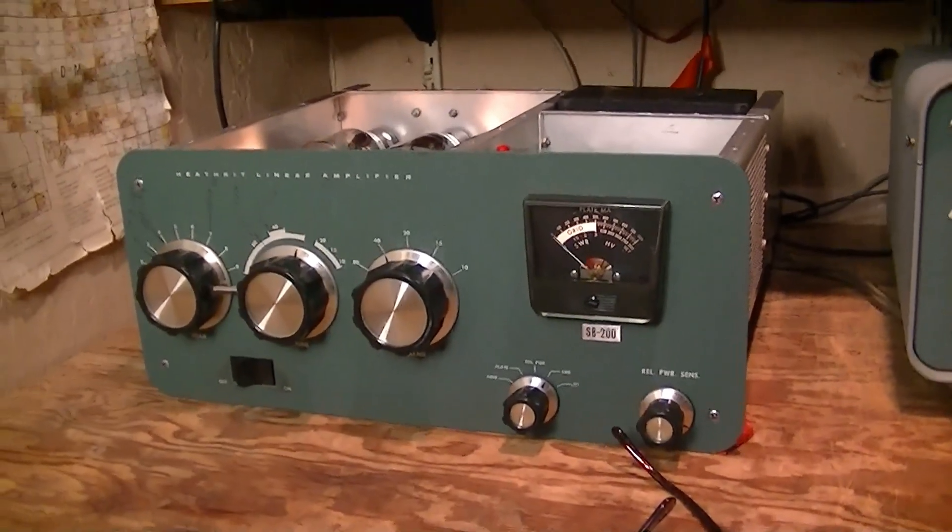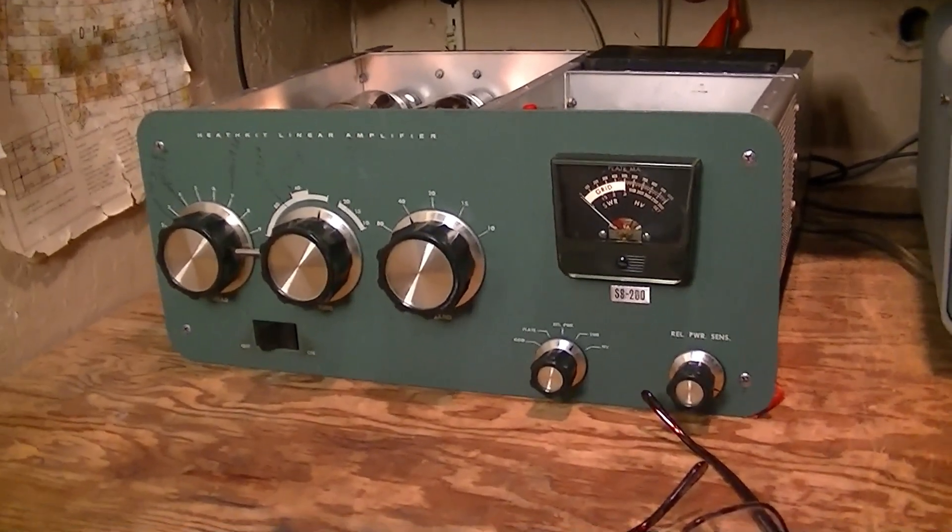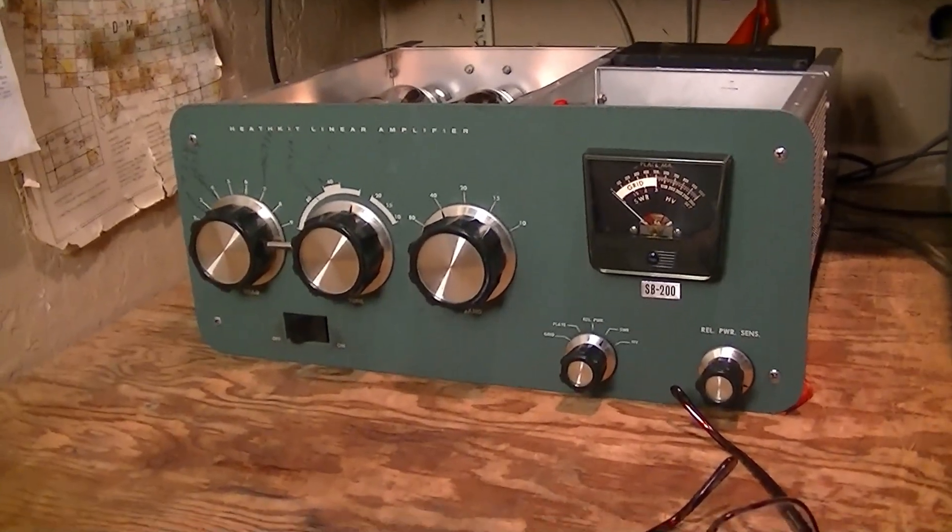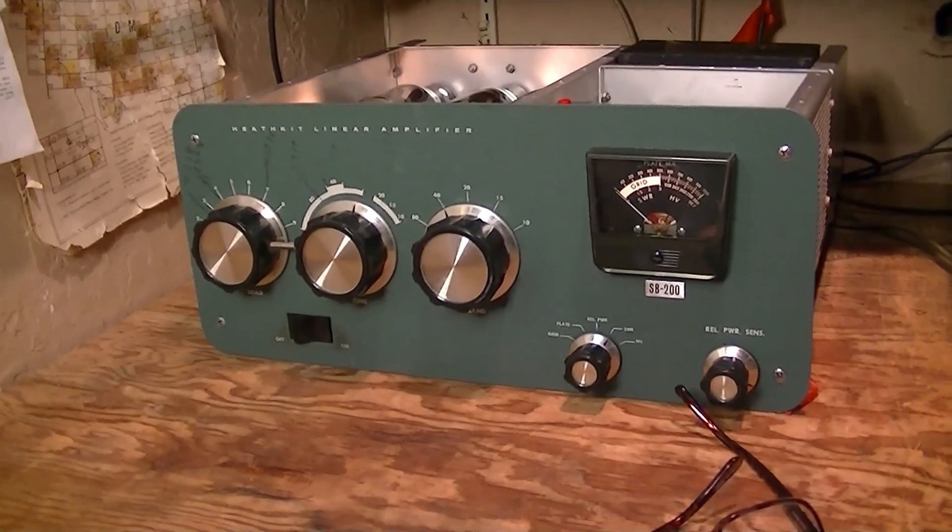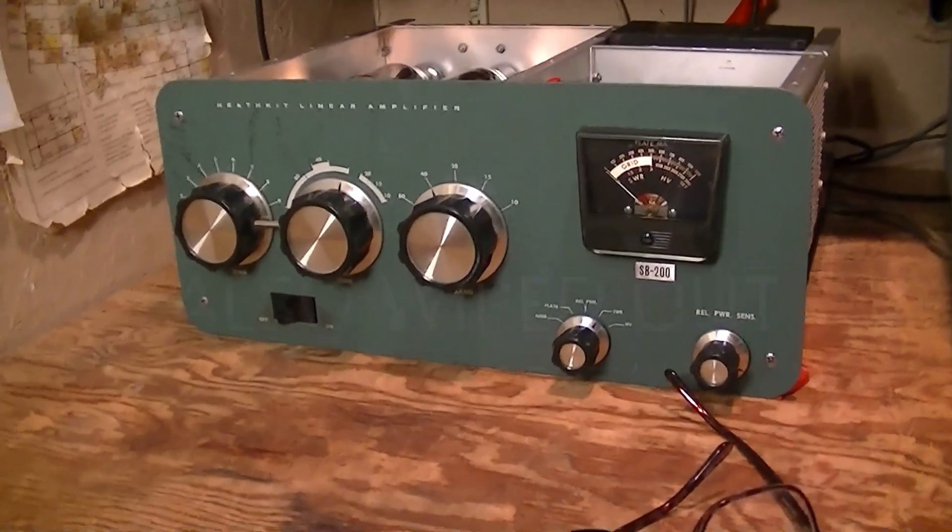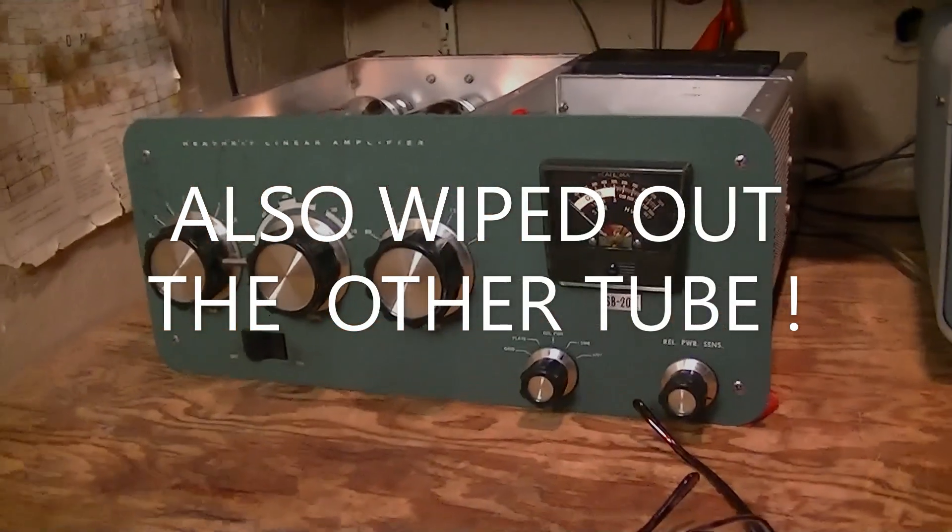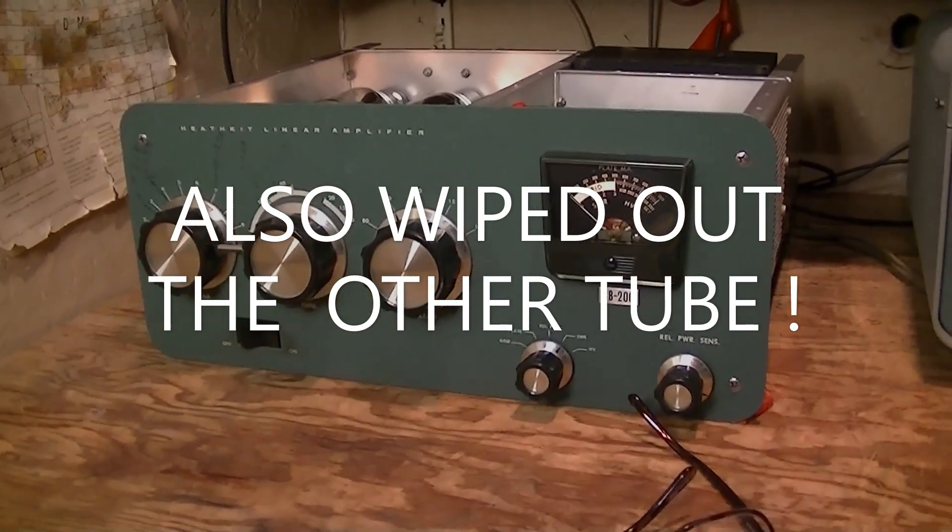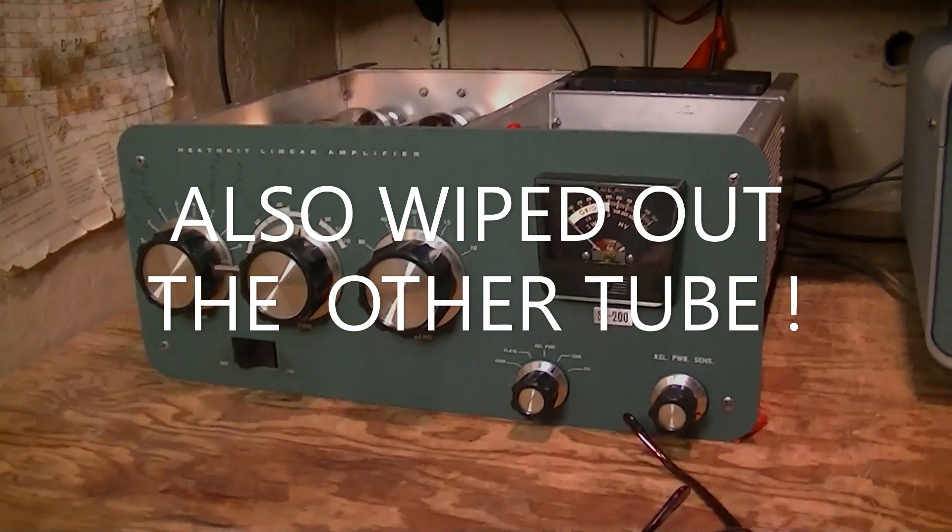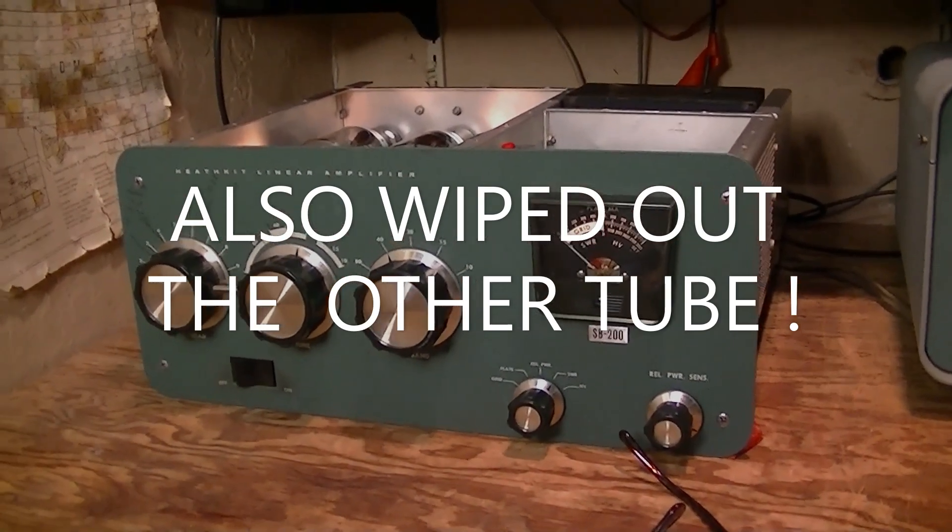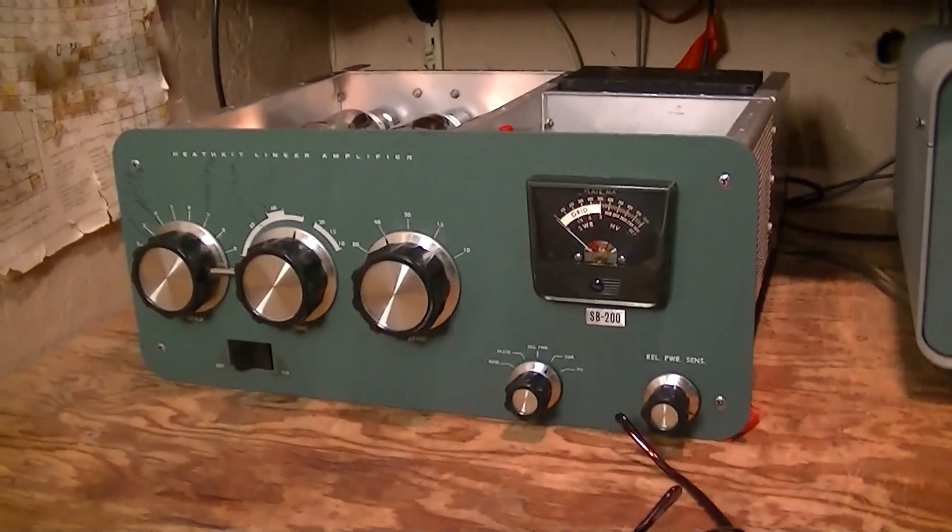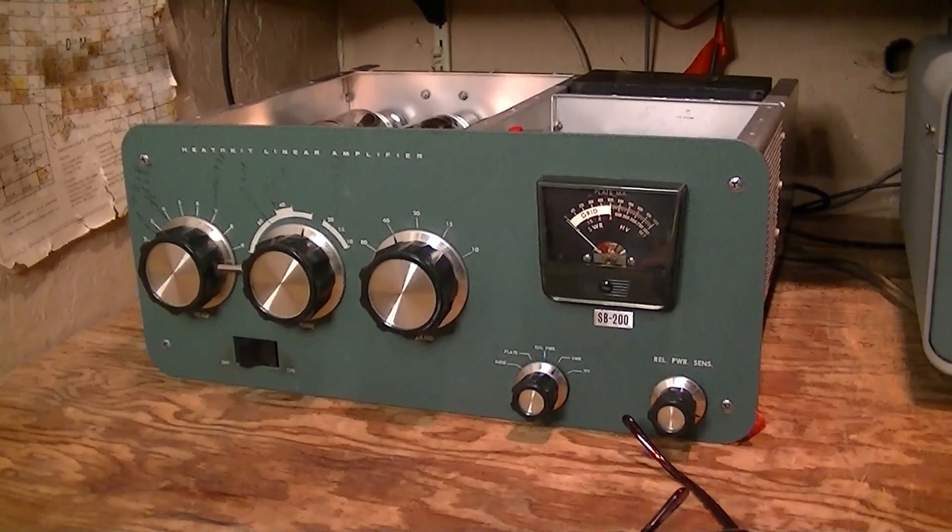I think what caused this was simply a tube failure where we had probably a filament to grid short or a grid to plate short, wiped out a tube and wiped out a resistor in the metering circuit in the power supply board. Those are the only things I could find wrong. So I replaced that resistor, put a new set of tubes in here which I'm very happy with. Used Cetron tubes, making full output. This thing's running at 70 percent efficiency which it has not done for many years.